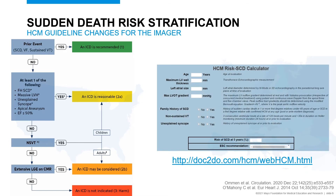Comparing this to the European guidelines, they use a calculator approach. The components of the European calculator are age, maximal wall thickness as a continuous variable, left atrial size (LA dimension on echocardiography), maximum LVOT gradient, family history of sudden death, non-sustained VT, and unexplained syncope. These inputs produce an estimated 5-year sudden cardiac death risk. There are times when the two guidelines are concordant, but notable differences exist: the European calculator includes age, LA size, and LVOT gradient, while the ACC/AHA guidelines now include extensive late gadolinium enhancement.